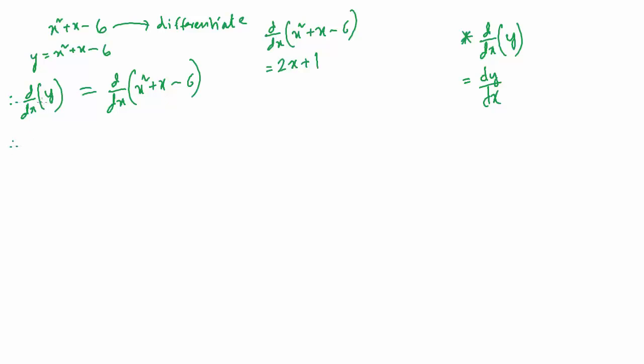Therefore, d by dx of y, the derivative is dy by dx. Then we write the equal to sign, and the d by dx of x squared plus x minus 6 is 2x plus 1. That way we can find dy by dx.